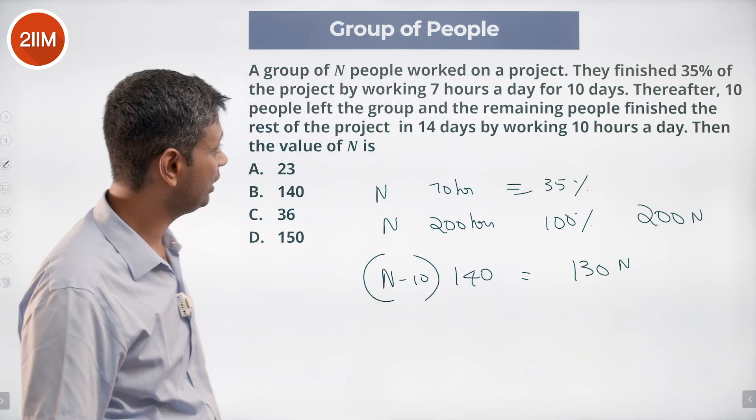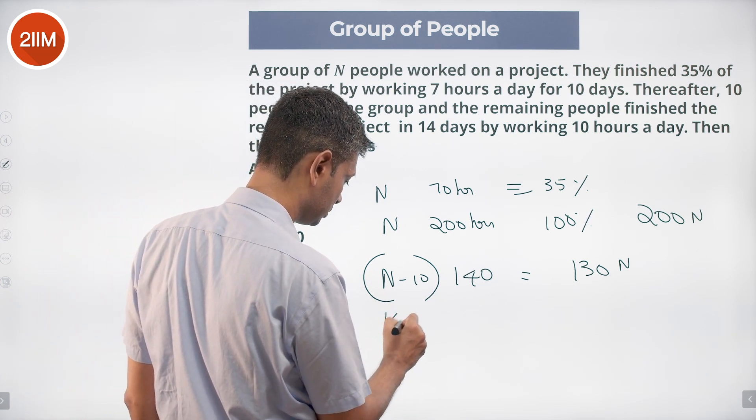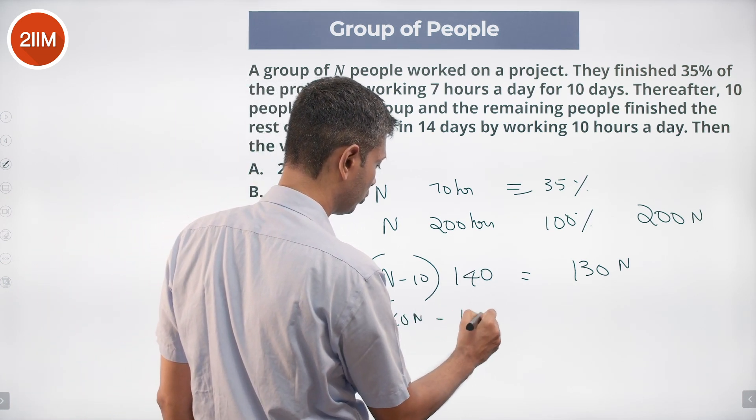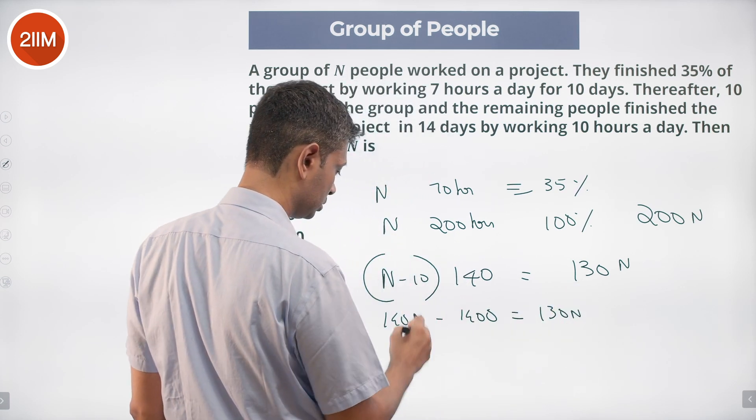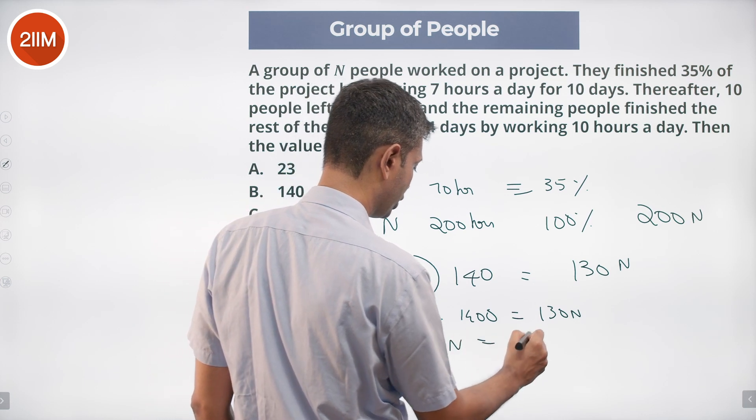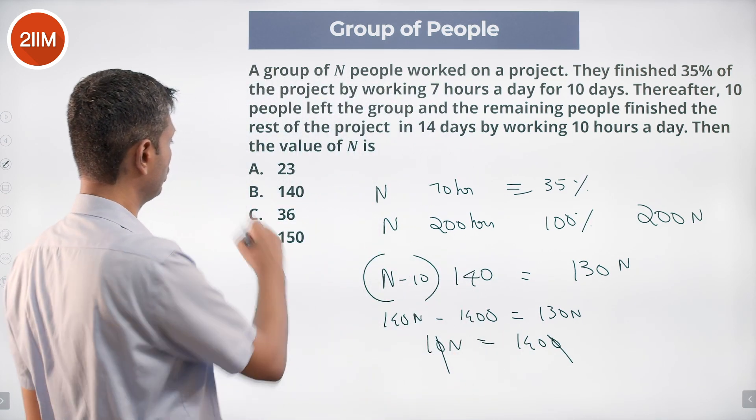Then the value of N: 140 times N minus 10 equals 130N. Simplifying: 140N minus 1400 equals 130N. So 140 minus 130 gives us 10N equals 1400, or N equals 140.